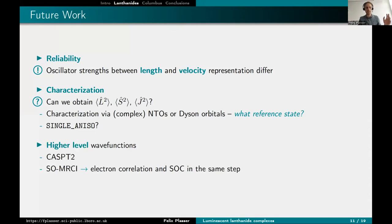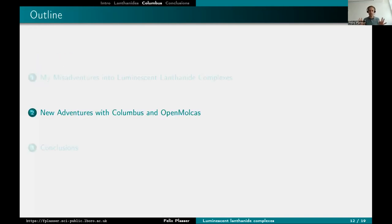That's kind of future work here. And maybe we should do a single NESO as the OpenMolcas module dedicated to lanthanides. Then of course, higher level wave functions, CASPT2, or we could do spin orbit MRCI, where we have the electron correlation and the spin orbit coupling in the same step. This takes me over to the next point of my talk, because what's a really great code where we can run spin orbit MRCI. And that's of course Columbus.